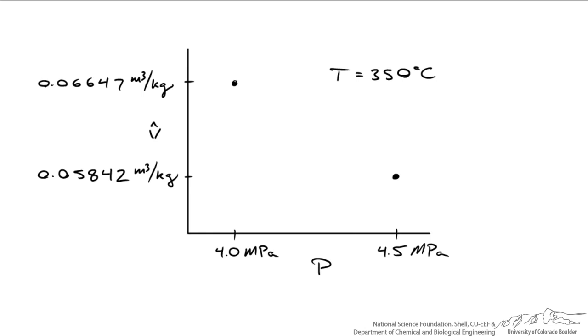So here's a graphical depiction of what we're doing. At a temperature of 350 degrees C, there's two data points. So let's assume, to make our lives easy, that there is a linear relationship between these two data points. We're going to connect the dots using a line. And the pressure we're interested in is at 4.2 MPa, and we want to know what this specific volume is equal to. And one thing to note is that the slope in this case is a negative slope. You increase the pressure and you decrease the specific volume, which makes sense for a vapor.